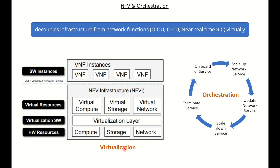Let's understand virtualization in a little more detail. Say we have one hardware which has certain compute, storage, and network — any machine or laptop we see today has these three resources. Through a virtualization layer on top of it, which is a hypervisor (we'll see it in the next slide in more detail), it fetches some resources from the underlying hardware and creates virtual machines on top of that.